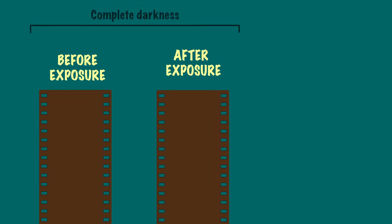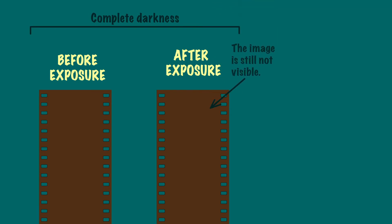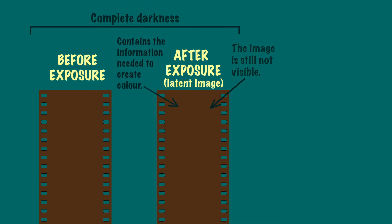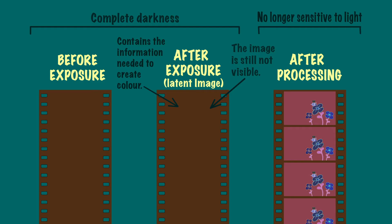After the film is exposed in the camera, the image is still not visible. Exposing the stock creates a latent image, which becomes fully formed during development. For colour film, it also still doesn't have any colour — it's just the information needed to create colour that has been captured. This is all completed when the film is processed.